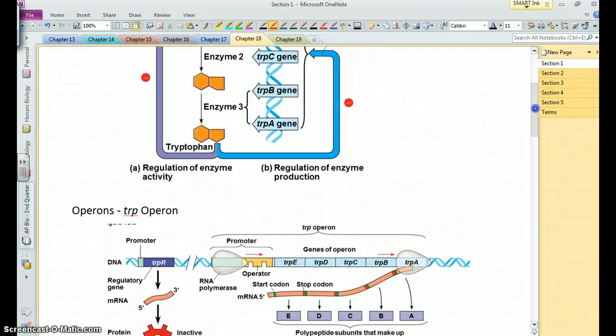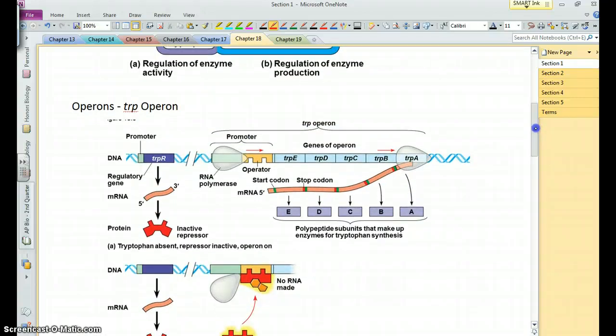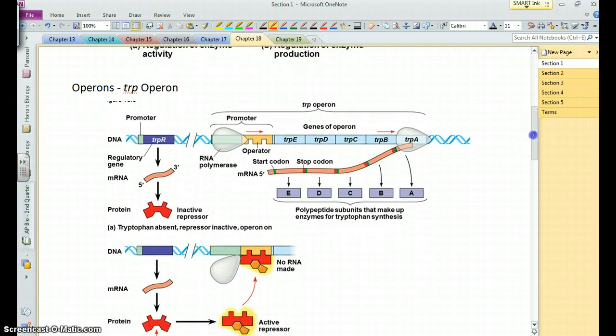Let's look at bacteria first and operons. We're going to look at the trp and the lac operon. An operon is a cluster of genes that code for enzymes that are used in the same biochemical pathway, and they are clustered together in the bacterial genome. It also includes an operator and a promoter, the promoter where the RNA polymerase binds, and the operator, as we'll see, is what binds with a repressor. All these genes are clustered and they're used for the same pathway, so they can be transcribed together because they're all going to be needed.